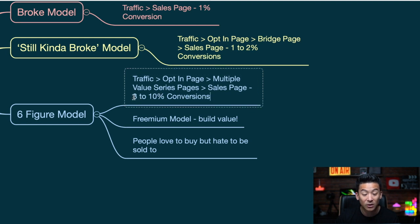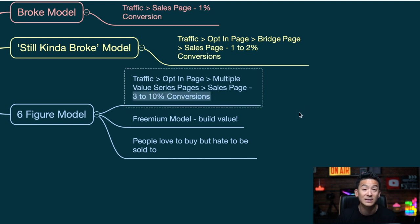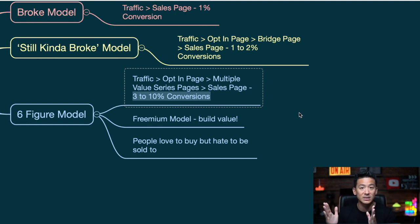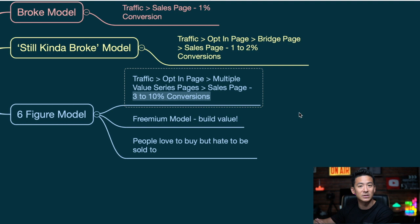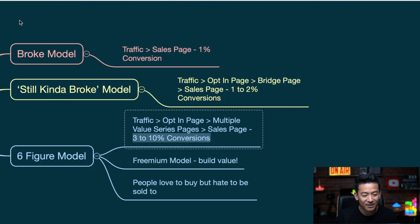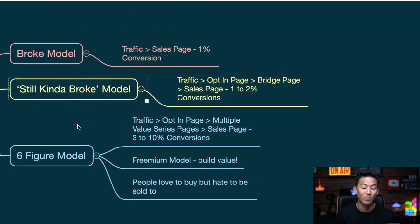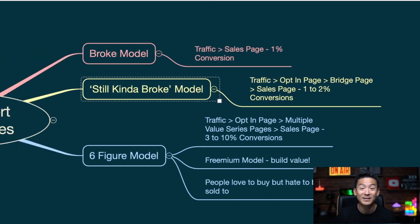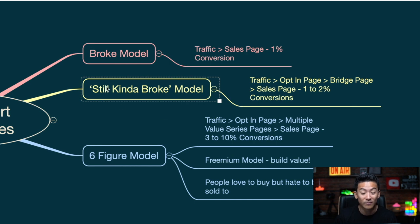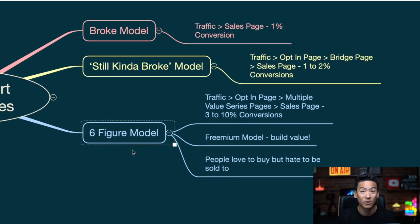This is what allows you to get conversions between three to ten percent, or sometimes even more, if you execute it right. The gap between three and ten percent depends on how well you execute your value series pages — execute them very well and you get higher conversions, execute them okay and you get lower, but even then conversions are still way better than the broke and still kind of broke models. I've got students doing forty thousand dollars a month because they moved from the still kind of broke model to the six-figure conversion model.